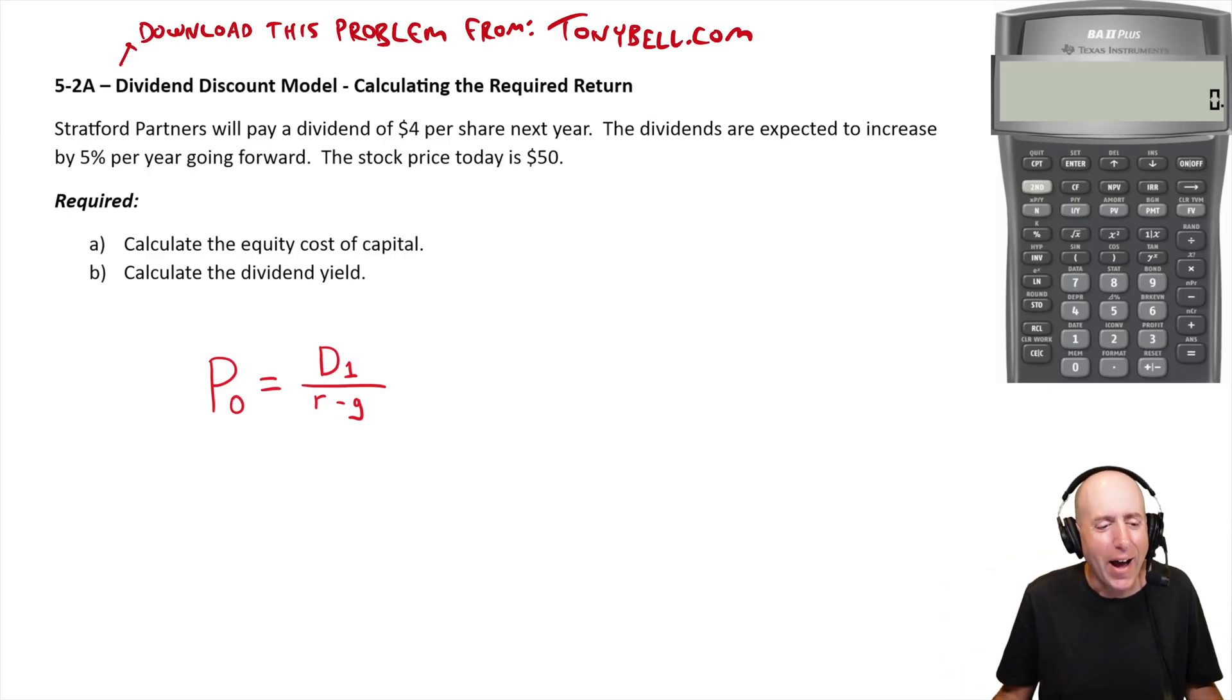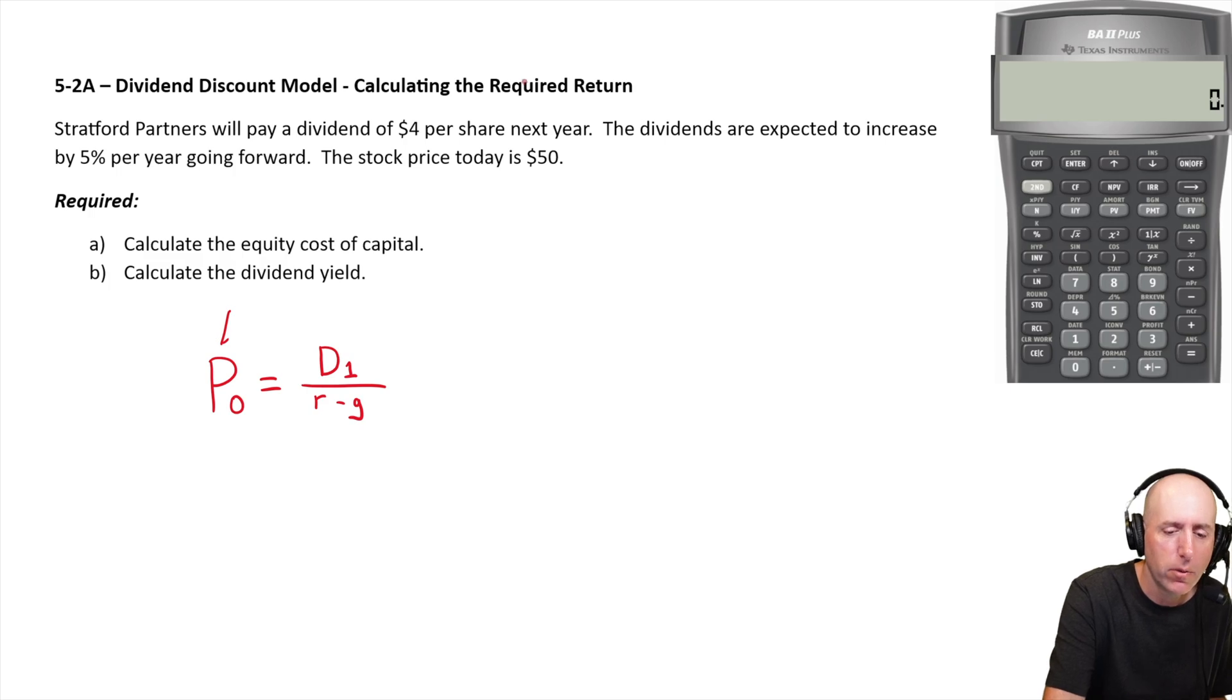Let's go through problem 5.2A more on the dividend discount model. This time with a little algebra at the start, because we're not solving for P zero, we're calculating the required return. We're calculating R, we're solving for that one.